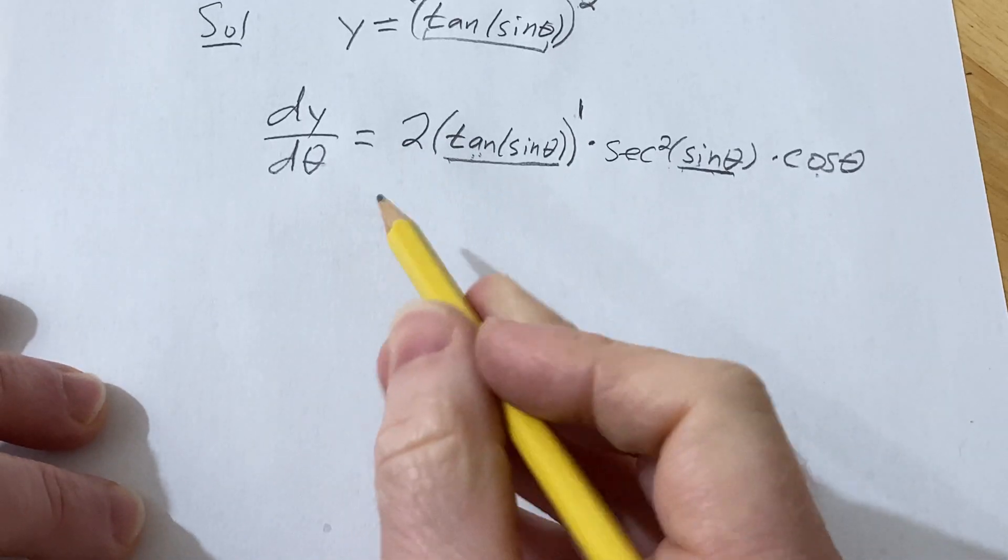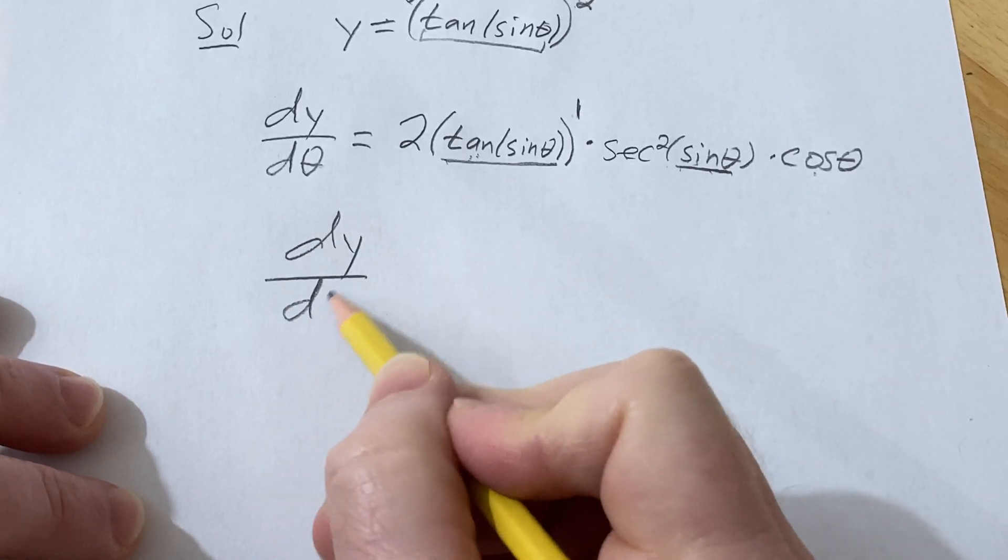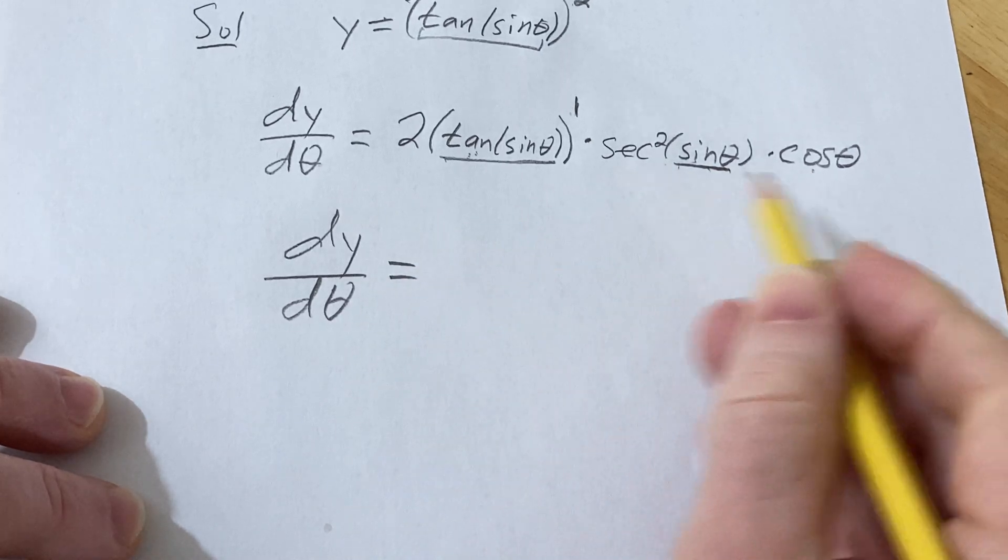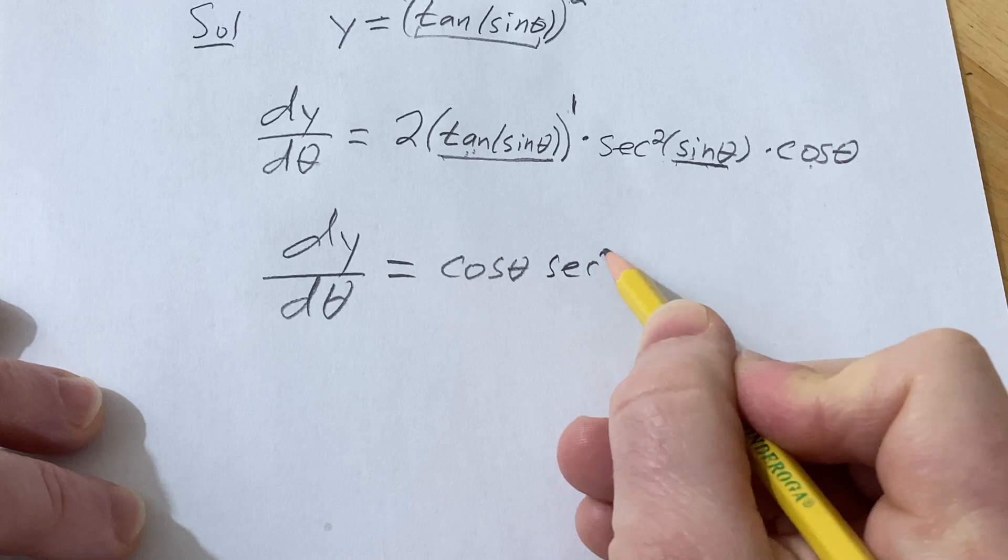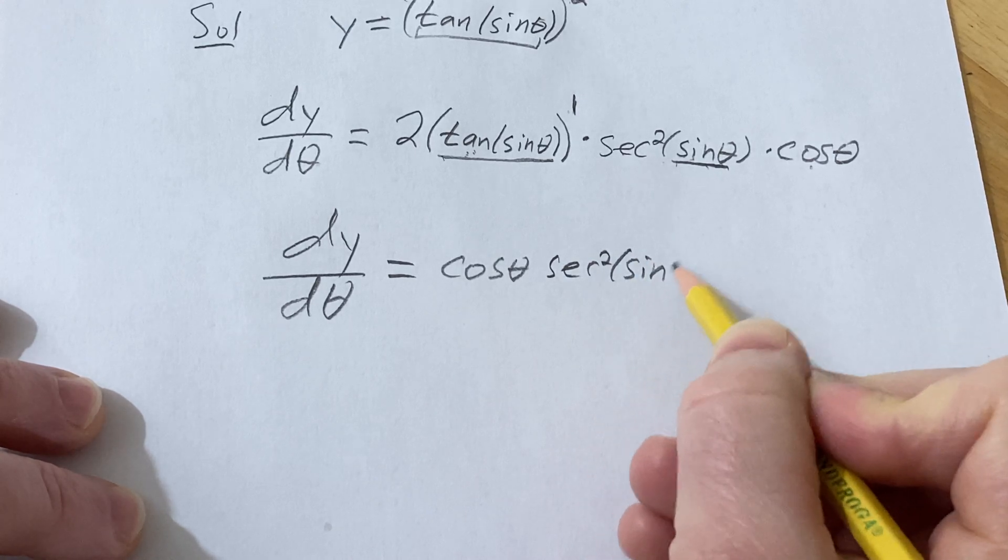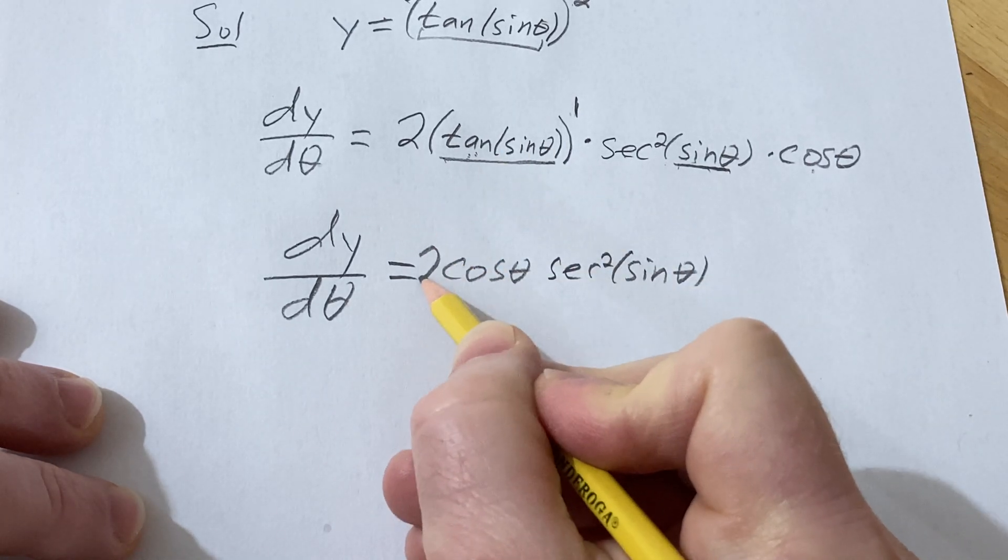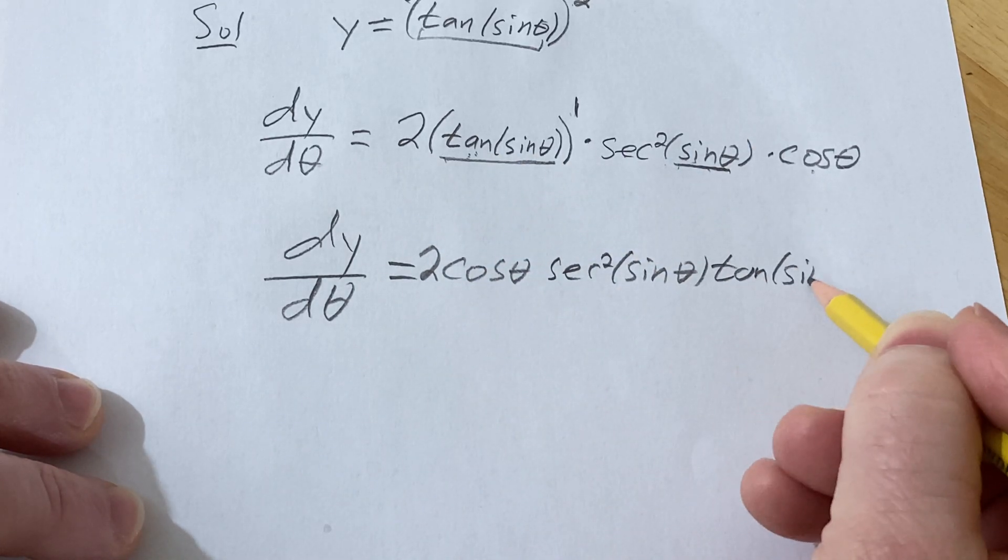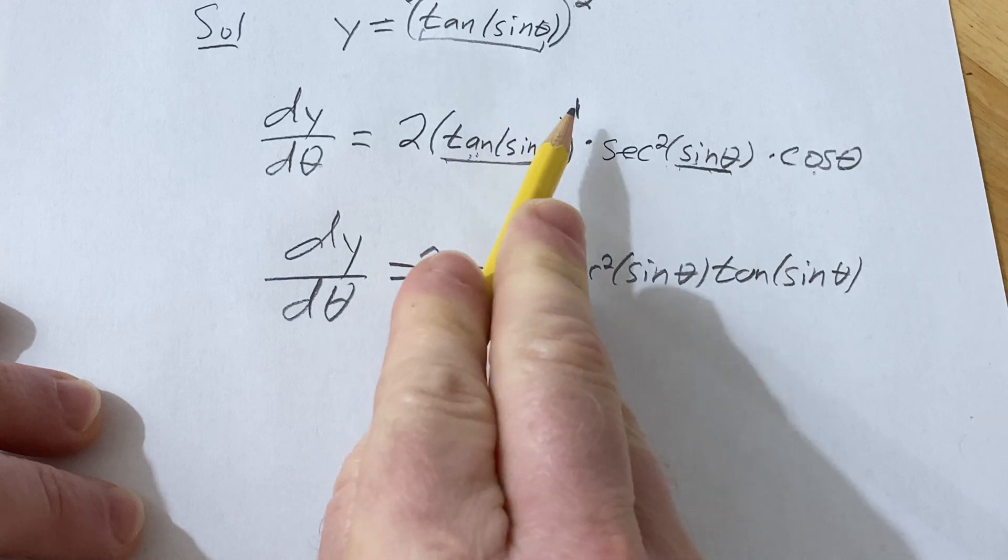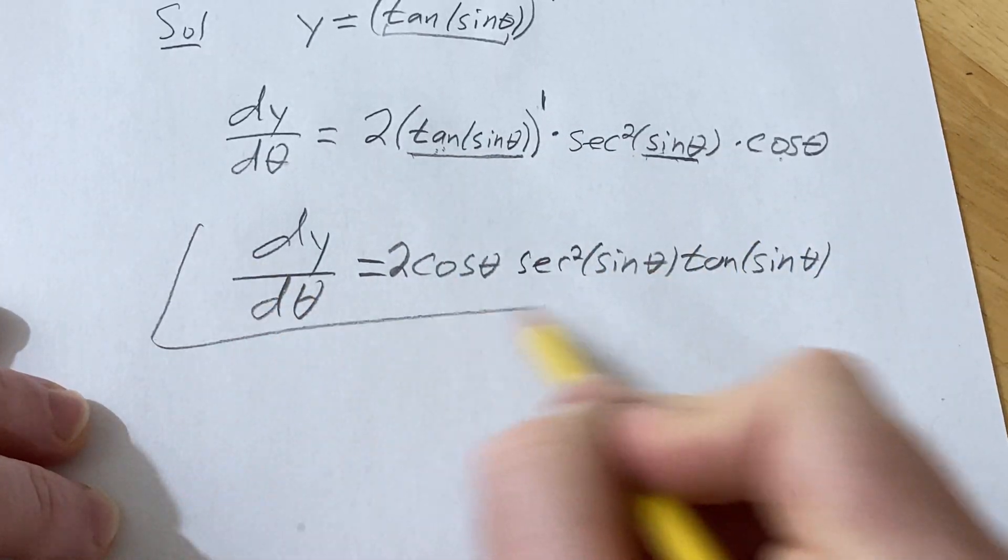The last thing to do is maybe erase this one. So dy/dθ. I'm actually going to put the cosine theta first. Then I'll put this one. Almost forgot my two. Then I'll put this one here. Just rearranging the terms. It doesn't really matter how you write them. Could have just left it like this and scratched out the one.